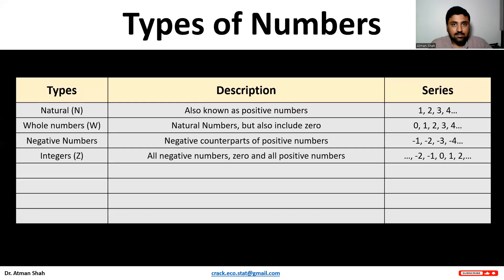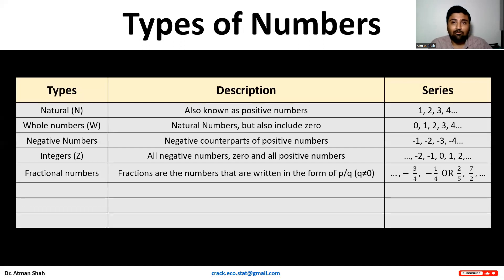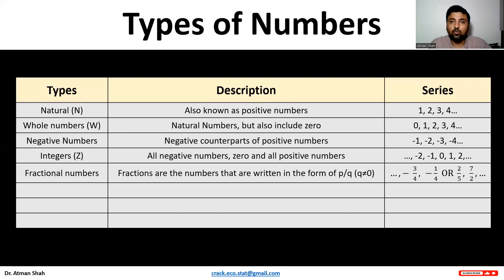Then we have integers. Integers include all negative numbers, 0, and positive numbers. The range of integers is minus infinity to plus infinity. Then we have fractional numbers. Fractions are numbers written in the form of p upon q, that is, as a ratio. We have negative fractional numbers and positive fractional numbers — for example, minus 3 upon 4, minus 1 upon 4, 2 upon 5, or 7 upon 2. We assume that q is not equal to 0, because if q equals 0 it becomes infinity.